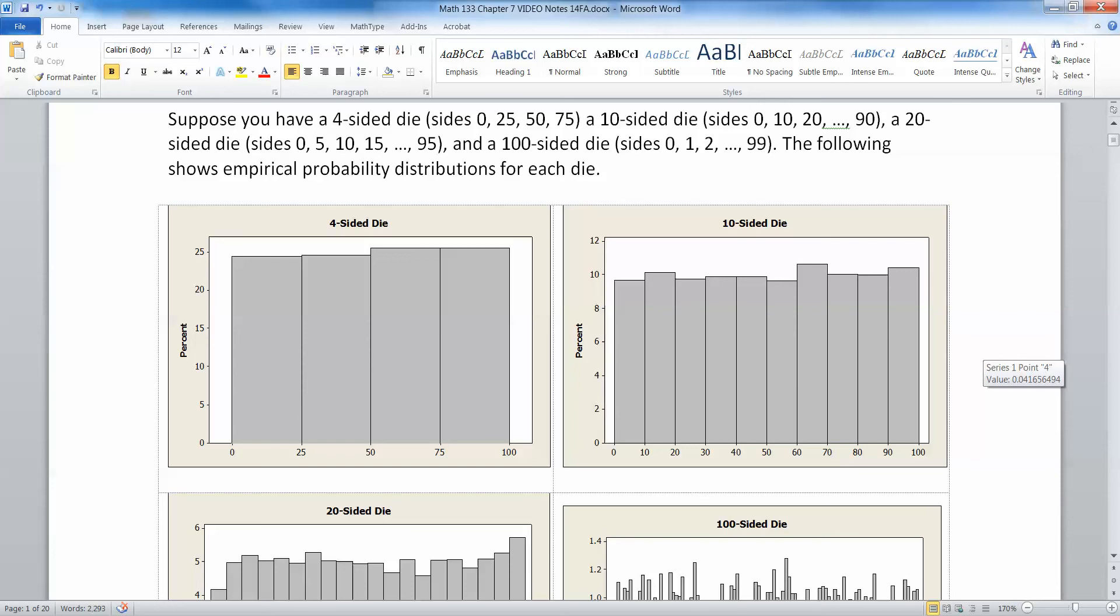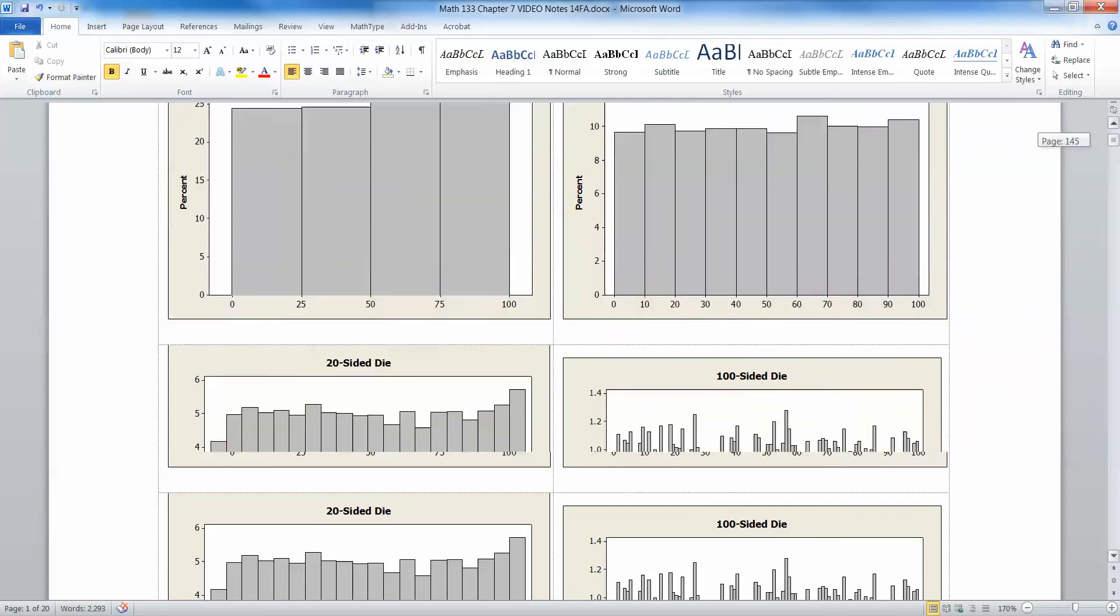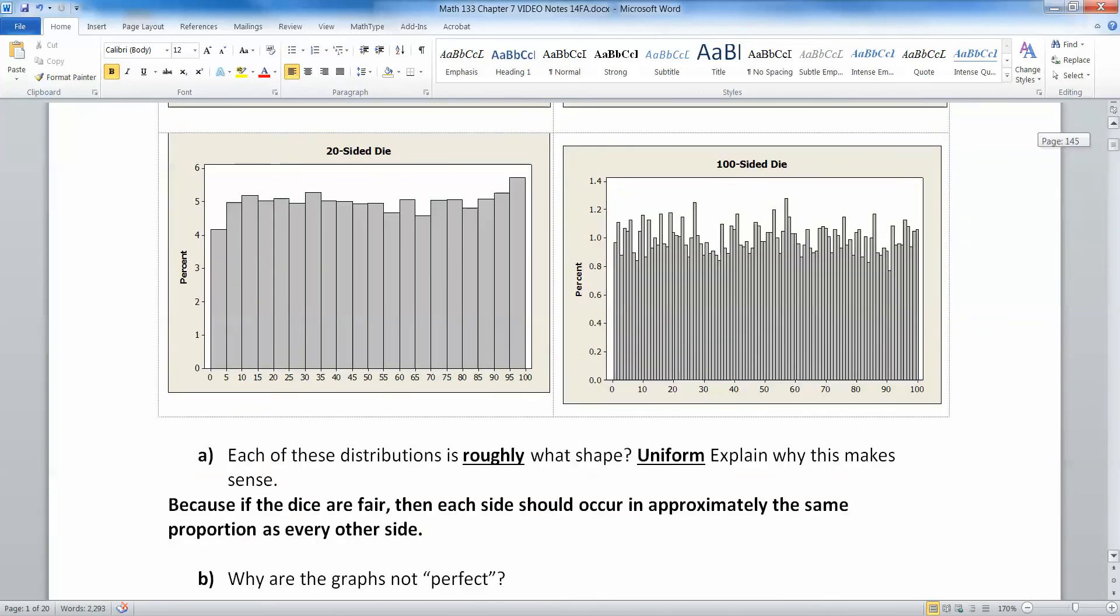In the last video, we noticed that if you take a discrete distribution and you increase your sample size, your n value, your curve becomes, well, your distribution becomes more and more continuous.